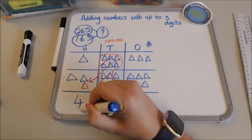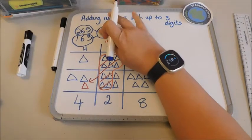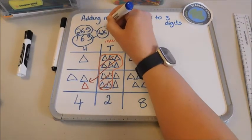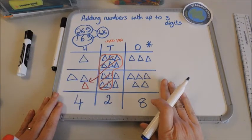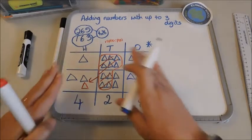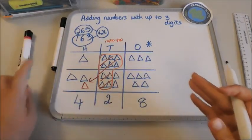So there you go, so now I know what my answer is. 265 add 163 is actually 428. We've started with the place value column and we've used counters or any other type of concrete resource or we've drawn it in and physically moved the shapes where we've needed to exchange.